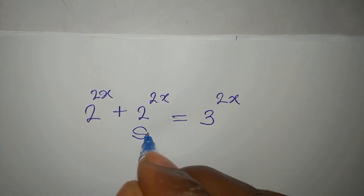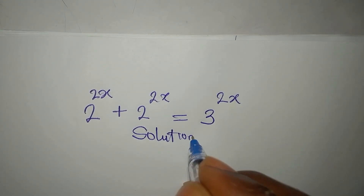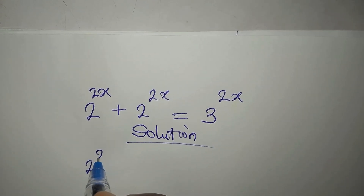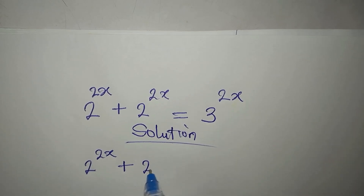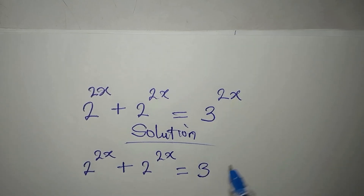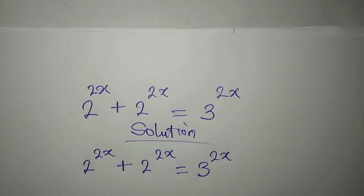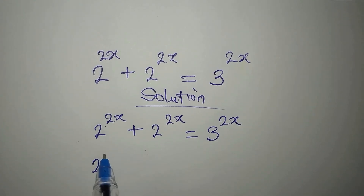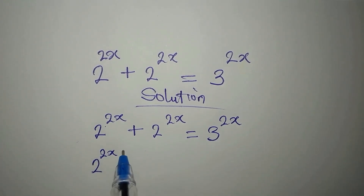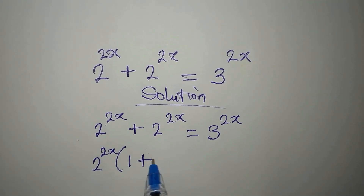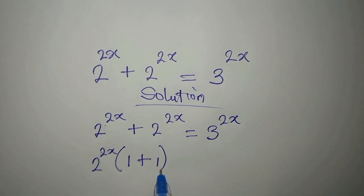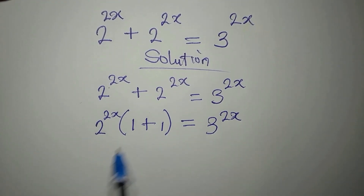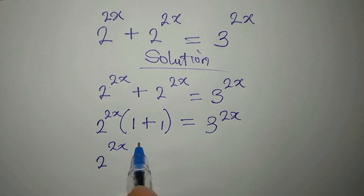Let's provide the solution to this problem. We have 2 to the power of 2x plus 2 to the power of 2x equals 3 to the power of 2x. On the left hand side, 2 to the power of 2x is a common factor, leaving 1 plus 1, which equals 2 to the power of 2x into bracket 2, equal to 3 to the power of 2x.